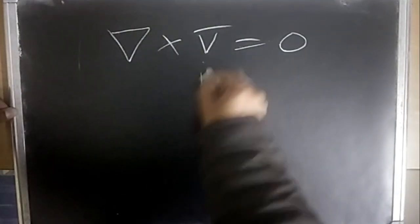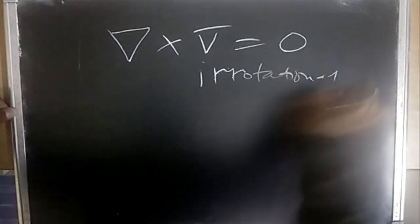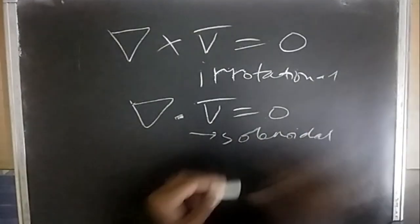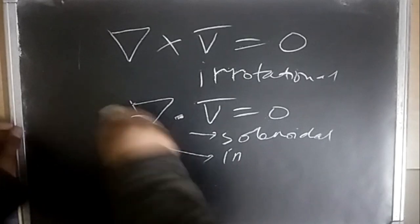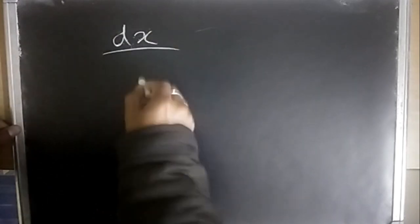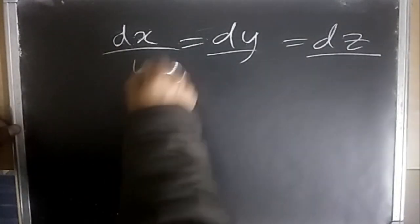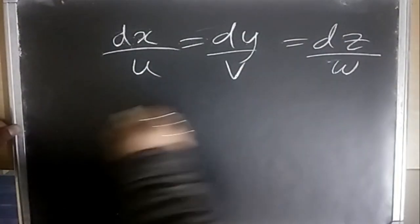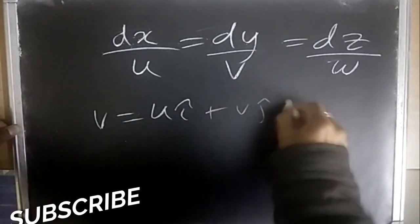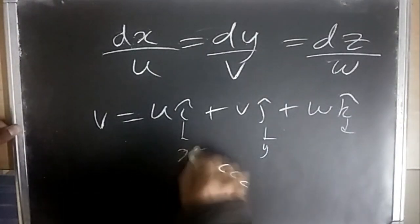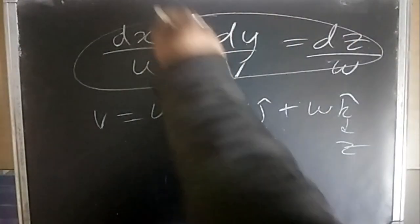If a fluid is irrotational, the curl of the velocity vector is zero. ∇·v = 0 means a solenoidal vector field, which also means incompressible flow. The streamline equation is: dx/u = dy/v = dz/w, where the velocity vector v̄ = uî + vĵ + wk̂. This is because the tangent of the streamline gives the fluid velocity in each direction.